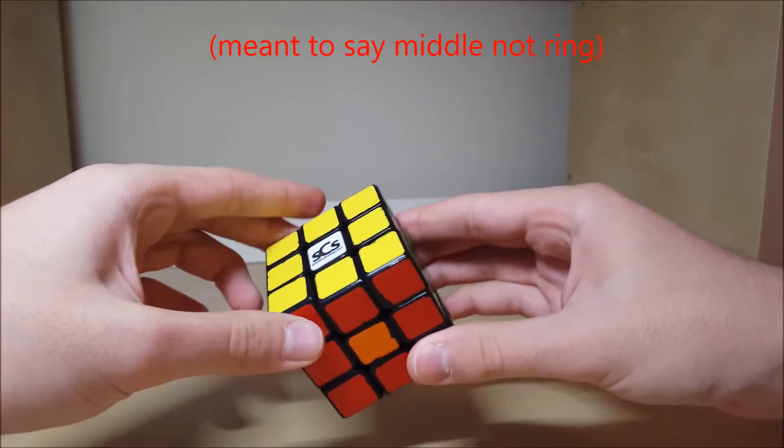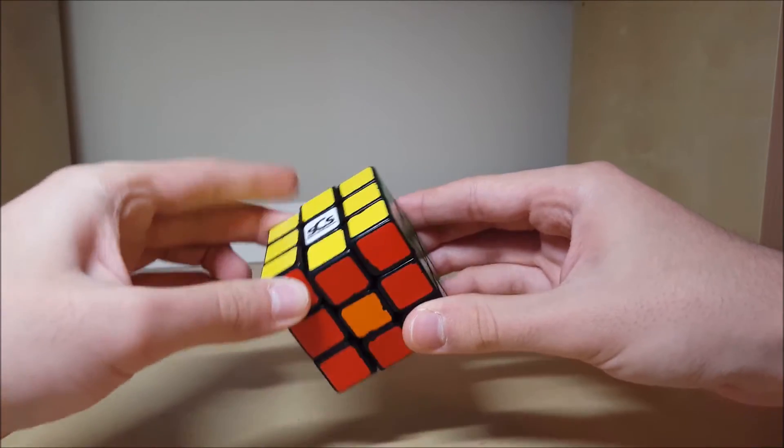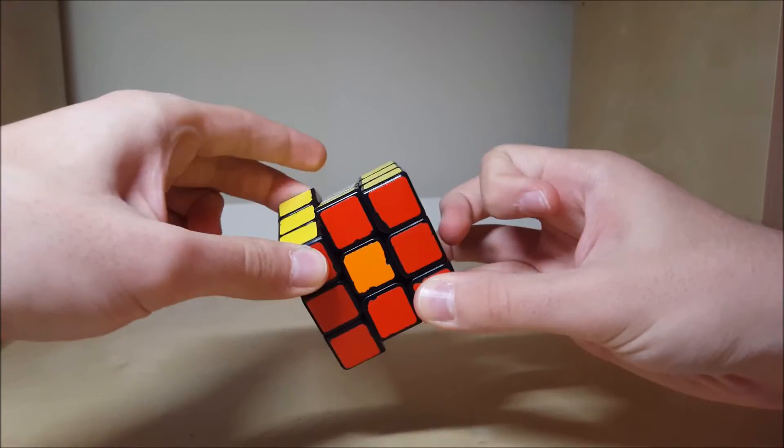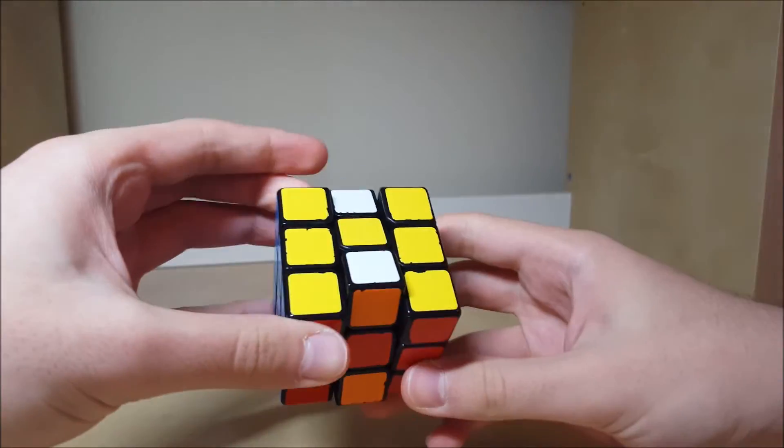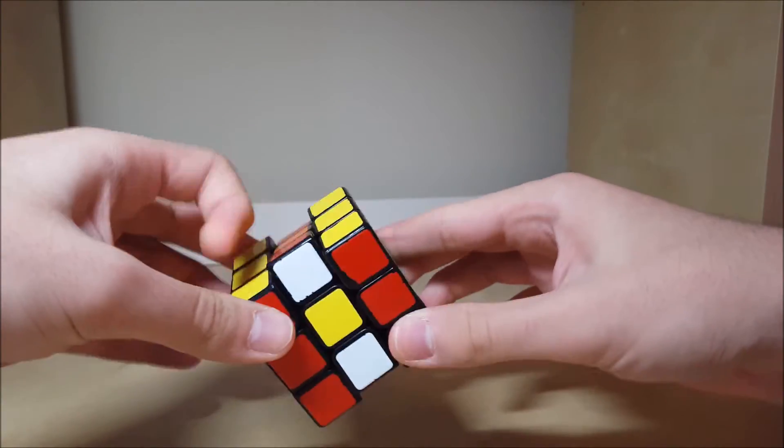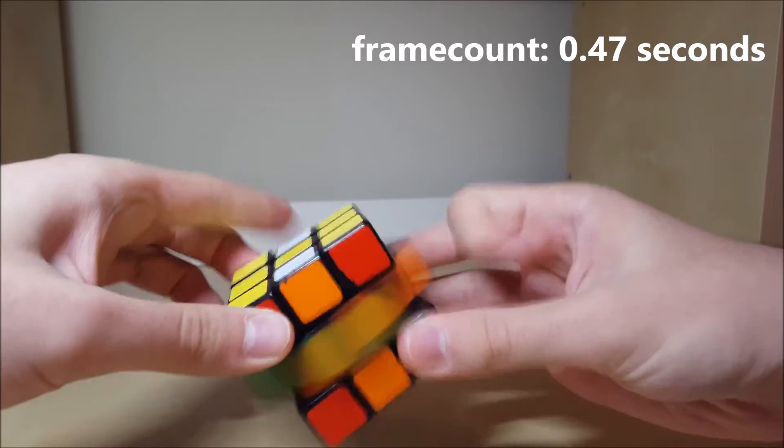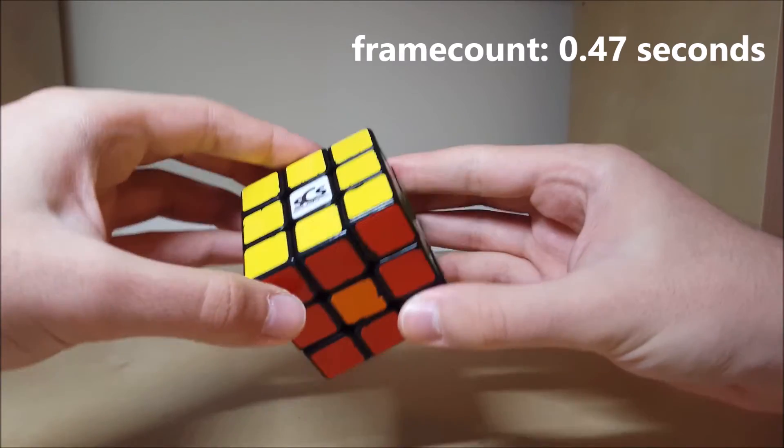And then for M, I go like this with this finger, and then M' I go like this. The execution would be, it can actually be done really quickly, especially if you have white on top. Both of them are M's, so then you can just go. But even if you have yellow on top, it's still really quick.